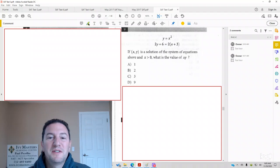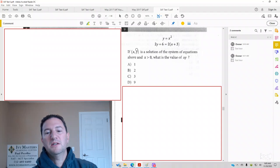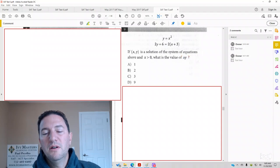Today we're going to look at Test 5, Section 3, number 9, which reads: If (x, y) is the solution to the system of equations above and x is greater than 0, what is the value of xy?